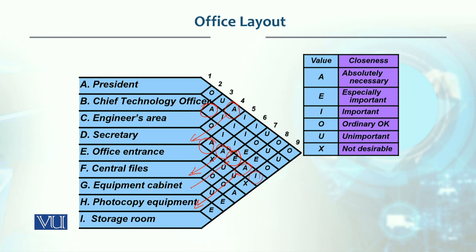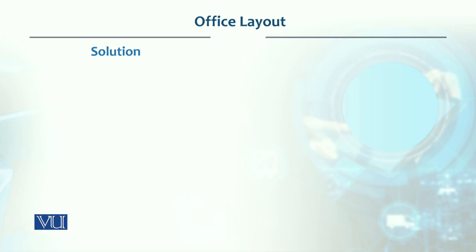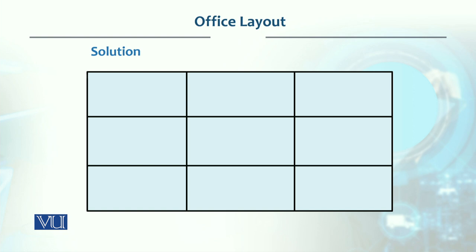That means the Secretary's office should be located in a more or less central area. With the Storage Room, it is important that it be located nearby. So if we look at the three by three matrix, these are the nine spaces. The central position should be used for the Secretary's office.